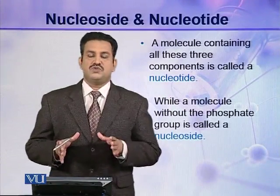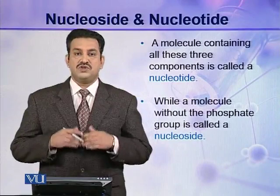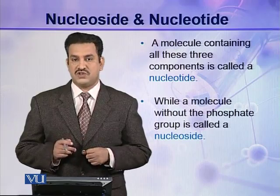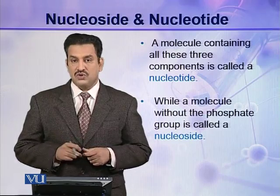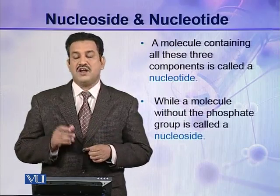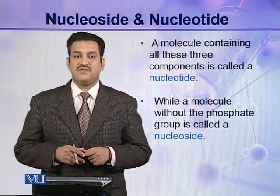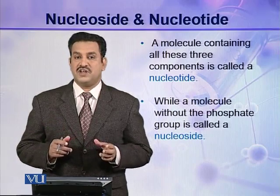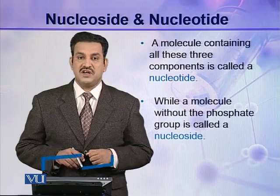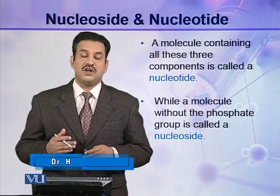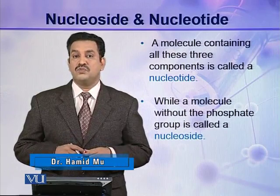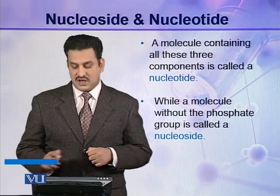Dear students, in this module I am going to introduce to you two new types of molecules: nucleosides and nucleotides. A molecule containing all three components — a pentose sugar, a nitrogenous base, and a phosphoric acid — is termed a nucleotide, while a molecule without a phosphate group is termed a nucleoside. In other words, a nucleotide with its phosphate group removed is called a nucleoside.